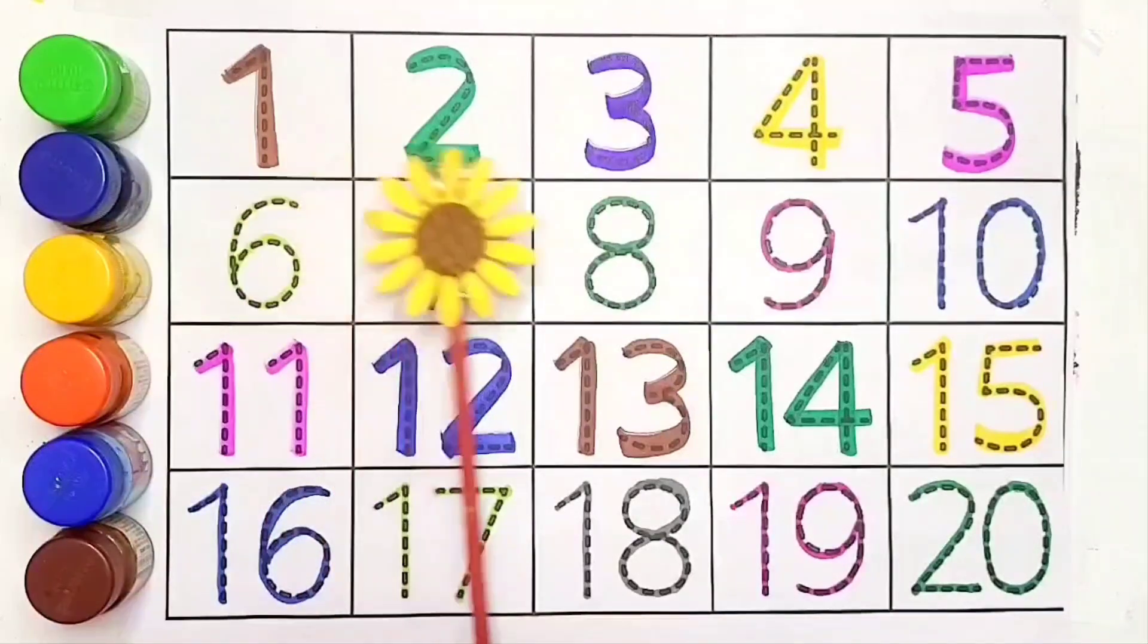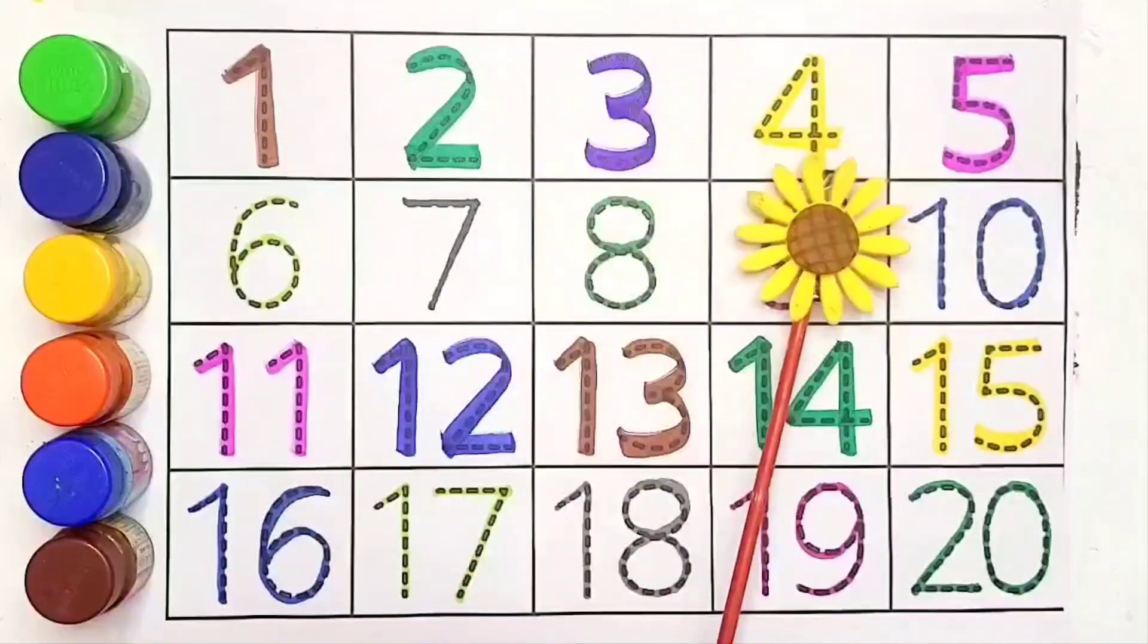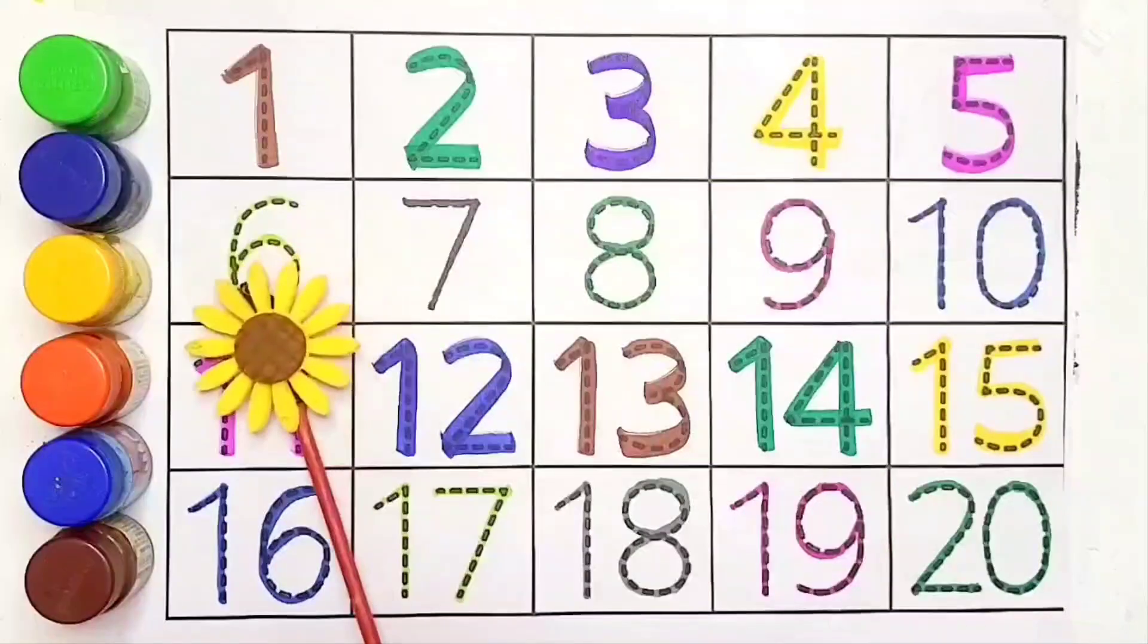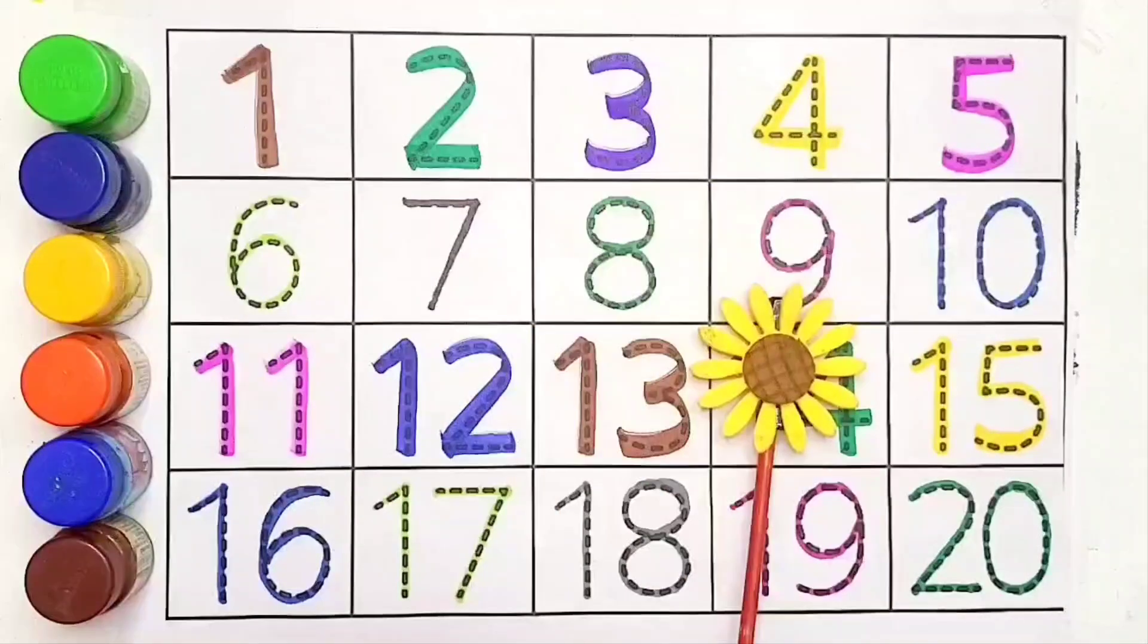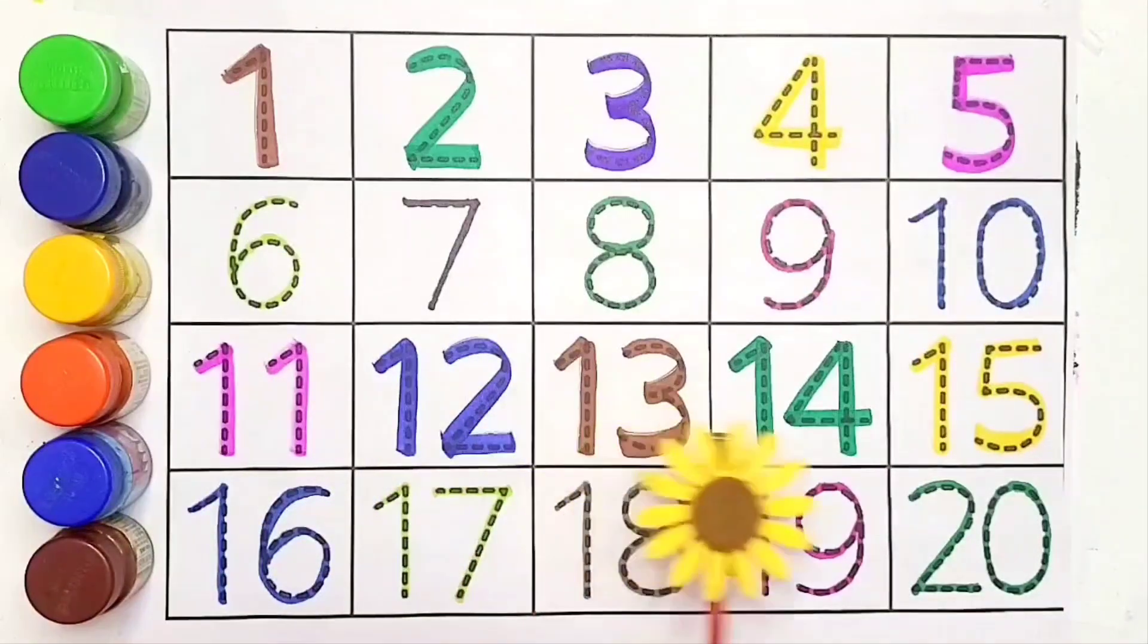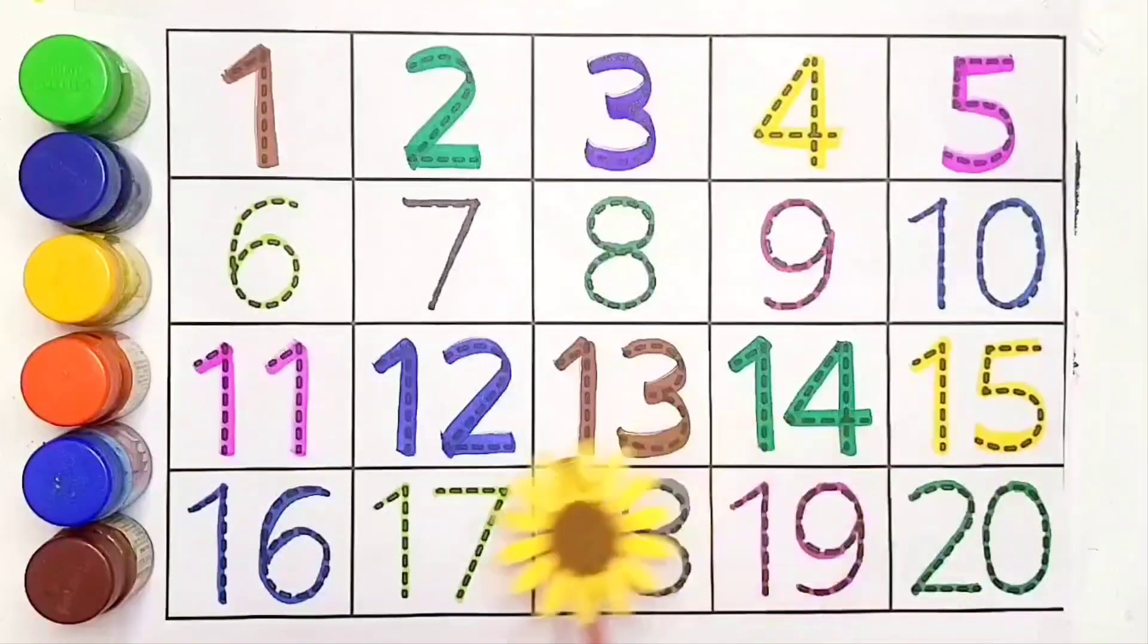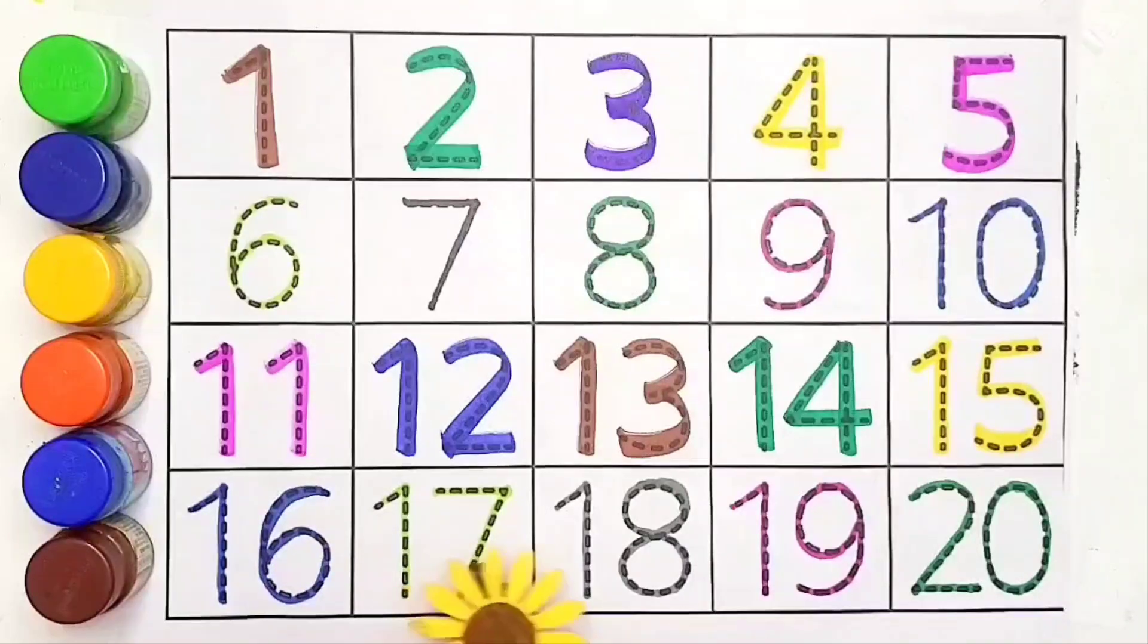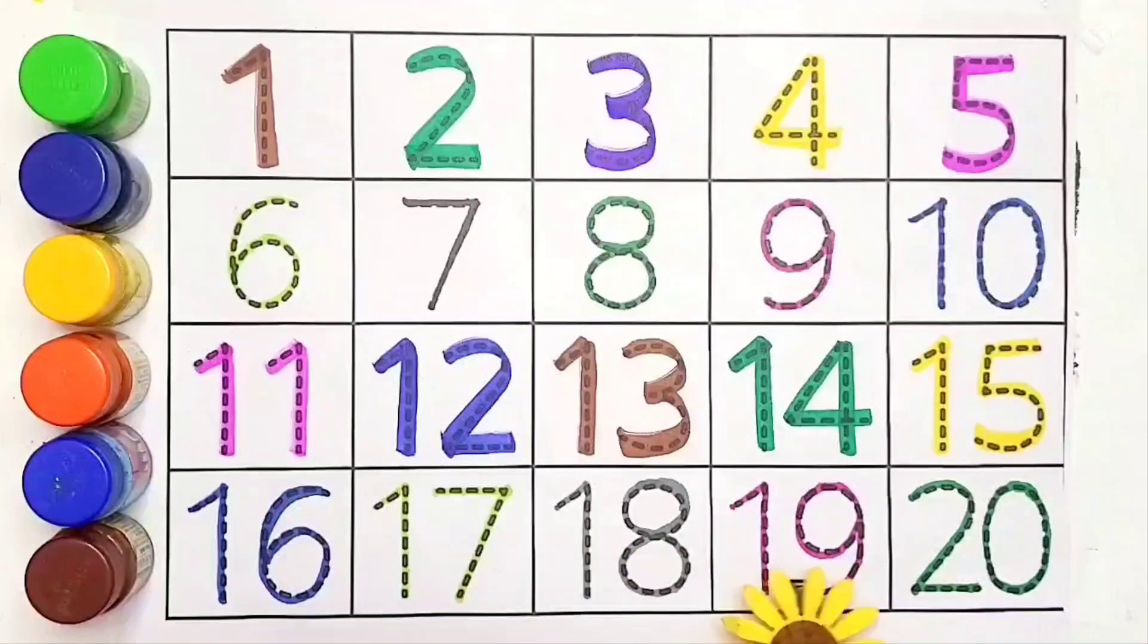One, two, three, four, five, six, seven, eight, nine, ten, eleven, twelve, thirteen, fourteen, fifteen, sixteen, seventeen, eighteen, nineteen, twenty.